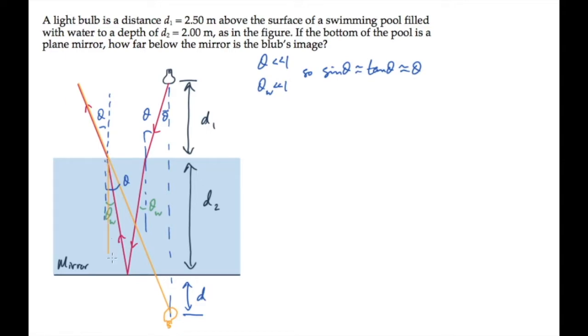We'll find the distance d using this large right triangle that I'm drawing in orange. Its vertical leg has a length l1, and the horizontal length is l2. Notice that l1 equals d2, the water's depth, plus d, the image distance that we're trying to find.